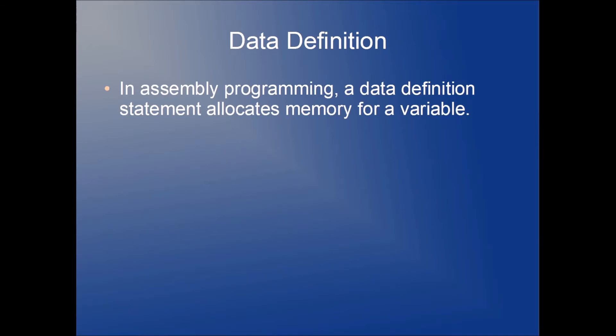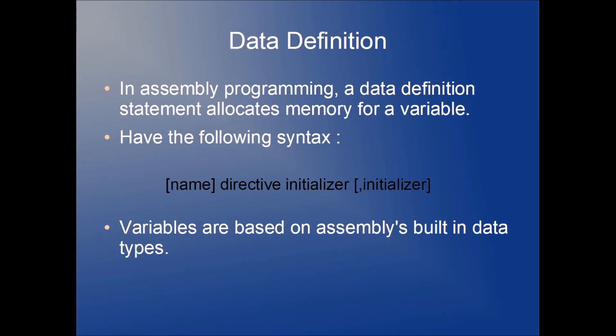With data definitions, in assembly programming a data definition statement allocates memory for a variable. They have the following syntax: we're going to have some name followed by a directive initializer and potentially additional initializers that are separated by commas. The variables are based on assemblies built in data types. And this code is going to be added in the data segment of the assembly program.